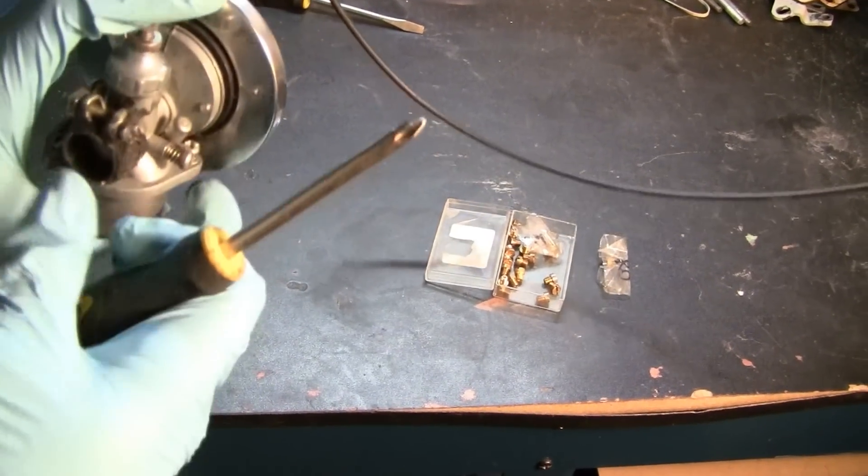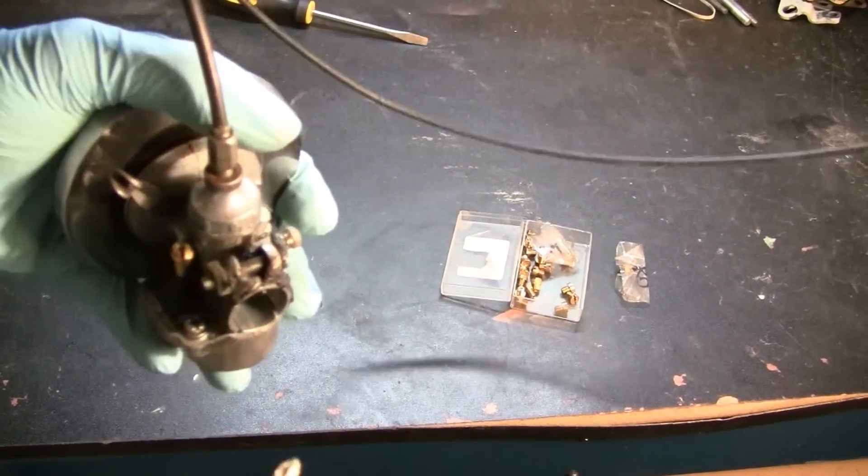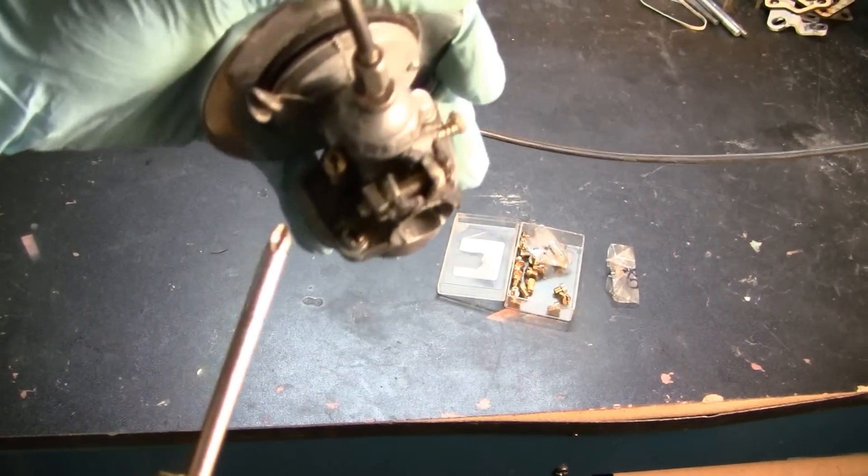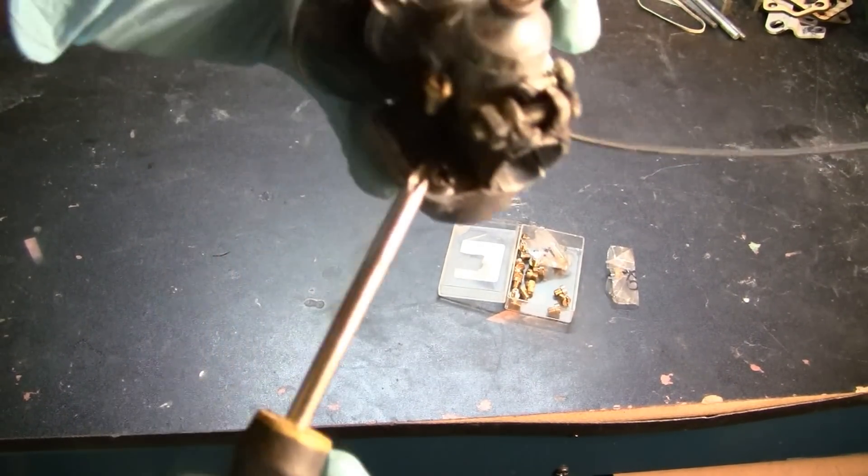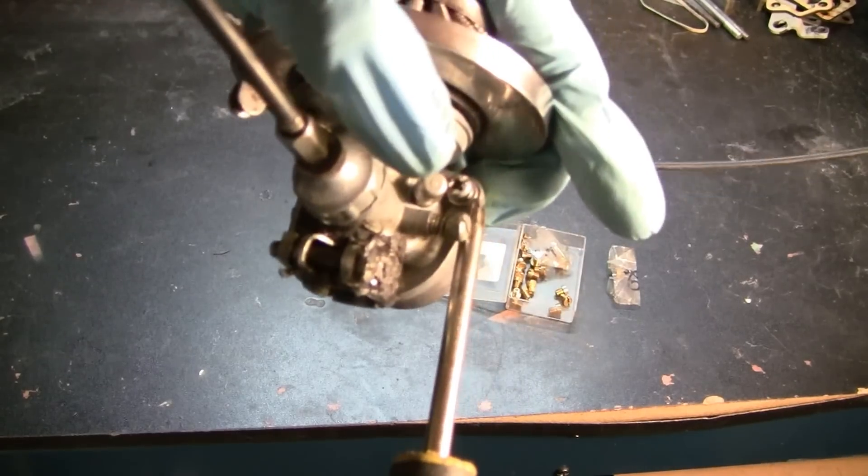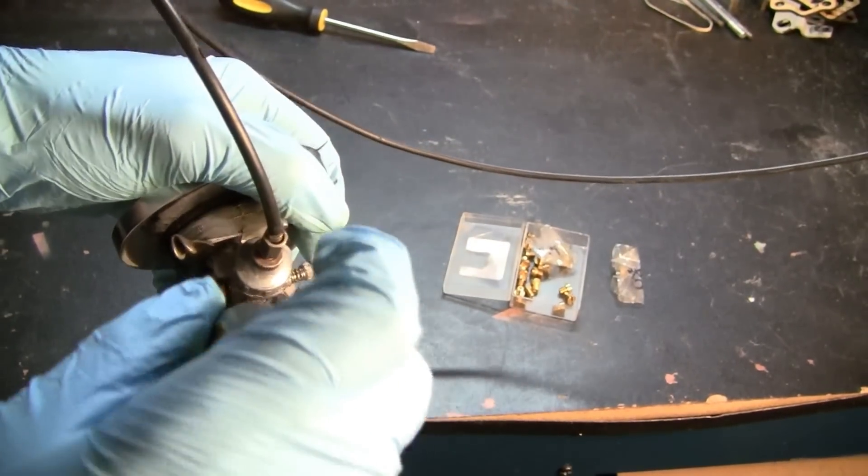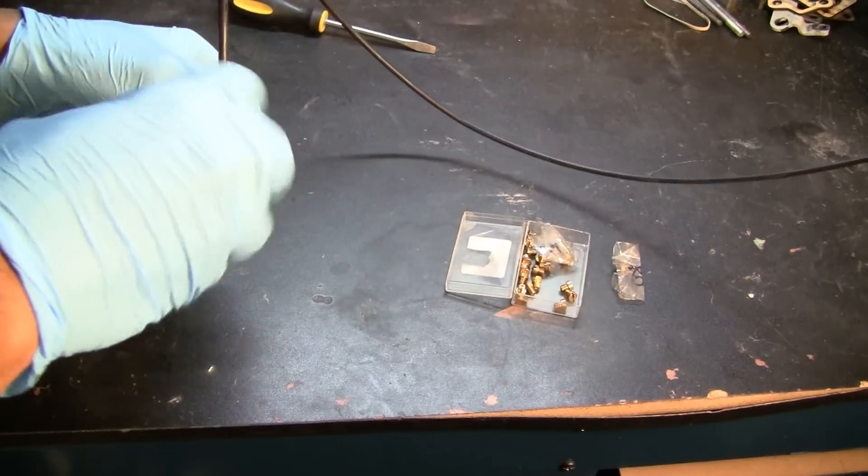What you want to do is detach your carburetor from your engine. You want to have it as free as possible. There's going to be two bolts - one here and another one right there. You want to unscrew both of them.